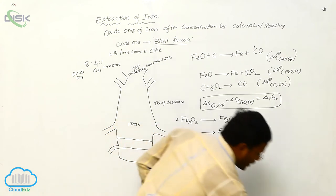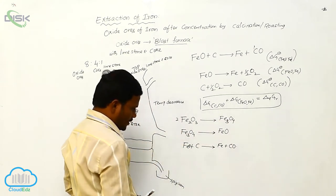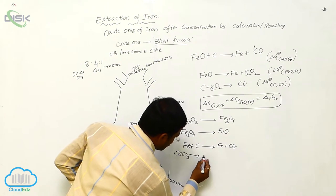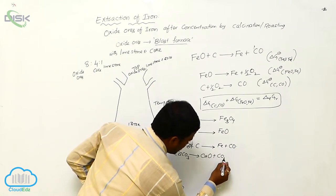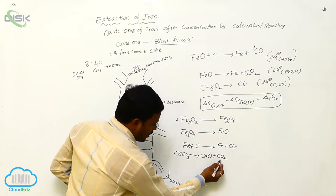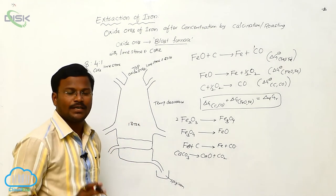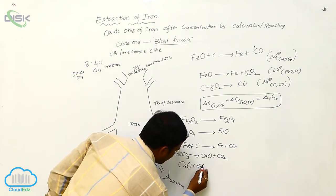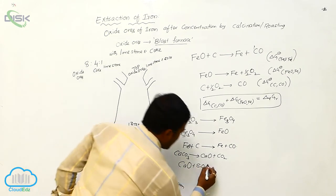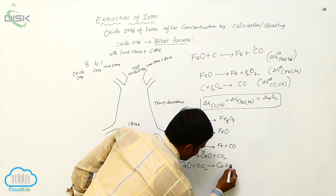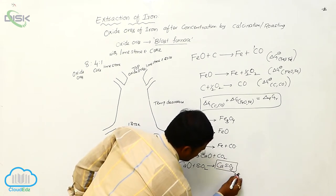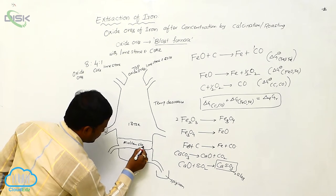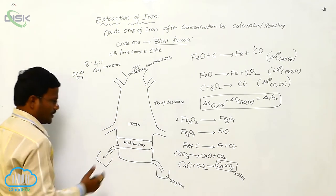During this process, the added limestone also dissociates and produces calcium oxide and carbon dioxide. The calcium oxide will be left as impurity. To remove these impurities, calcium oxide will react with silica and converts into calcium silicate. This calcium silicate is left as slag. This molten slag will be collected from this entrance.